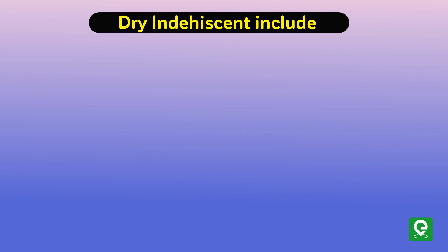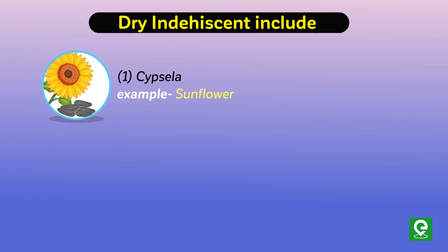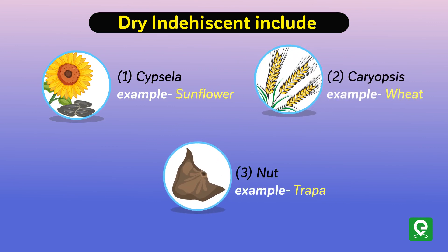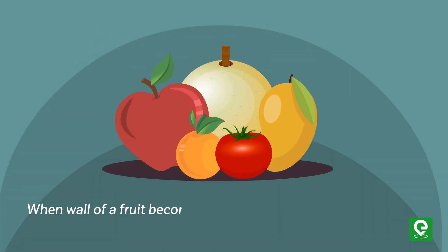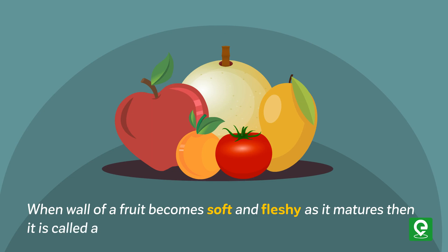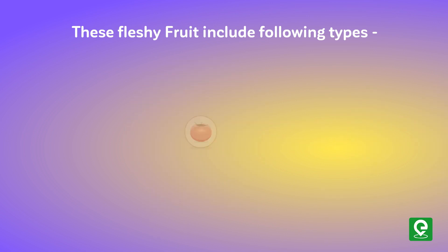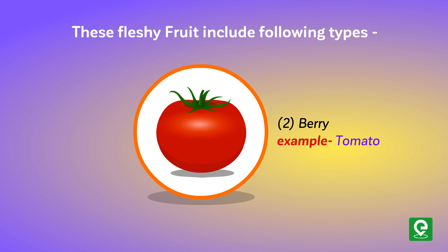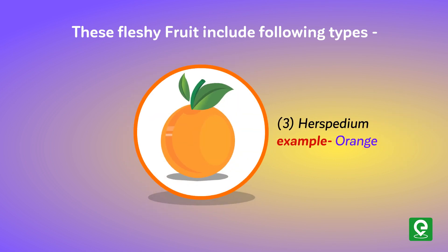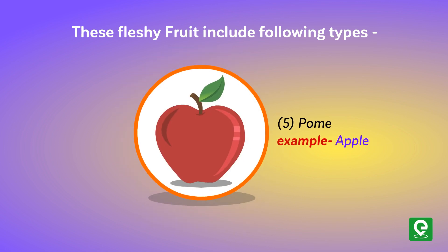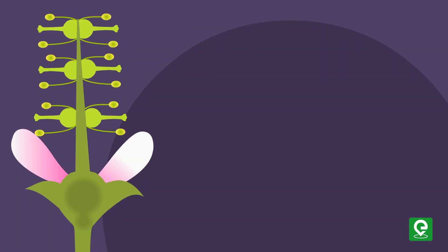Dry indehiscent fruits include: cypsela (example: sunflower), caryopsis (example: wheat), and nut (example: Trapa). When the wall of a fruit becomes soft and fleshy as it matures, it is called a fleshy fruit. Fleshy fruits include: drupe (example: mango), berry (example: tomato), hesperidium (example: orange), amphisarca (example: wood apple), and pome (example: apple).